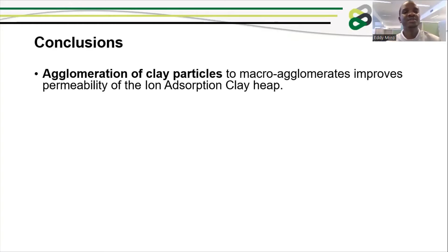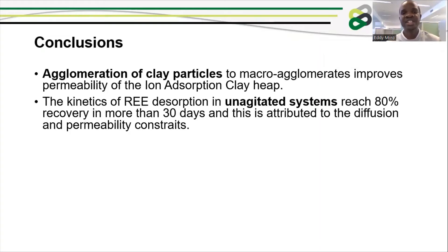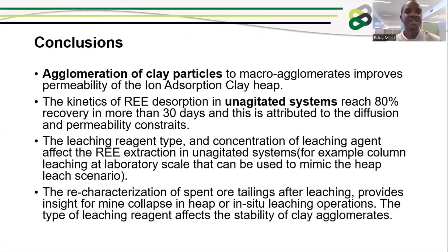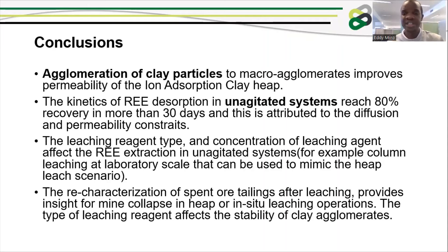In conclusion, agglomeration of clay particles to macro-agglomerates improves permeability of the iron adsorption clay heap. The kinetics of REE extraction can reach 80% recovery in more than 30 days, attributed to diffusion as a primary major constraint. The leaching reagent concentration affects REE extraction. Column leaching at laboratory scale can be used to mimic a heap leaching scenario. Characterization of the spent ore or tailings after leaching provides insight for heap collapse in heap or in-situ leaching operations. The type of leaching reagent affects the stability of clay agglomerates.